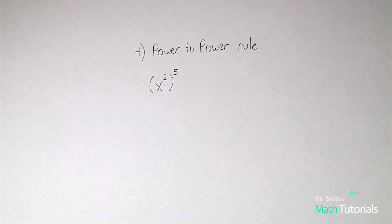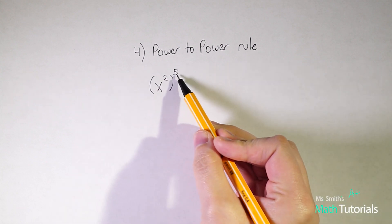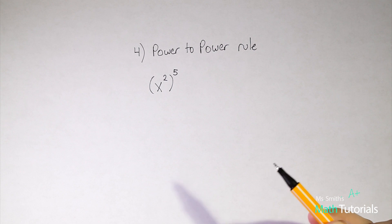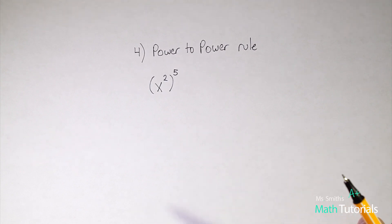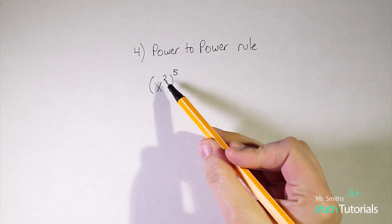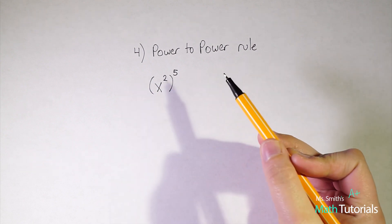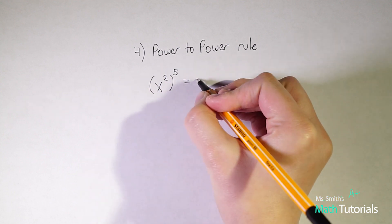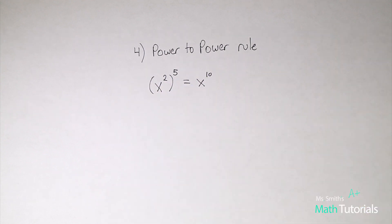So I always tell my students if we've got a power to a power there's so much power going on we need to do the most powerful operation that we can. So between adding, subtracting, multiplying, and dividing, what's the most powerful thing? And usually they will say multiplying because they know they can go from a really low number to a really high number very quickly. So power to power, we've got so much power going on we need to multiply. So 2 times 5 would be 10.